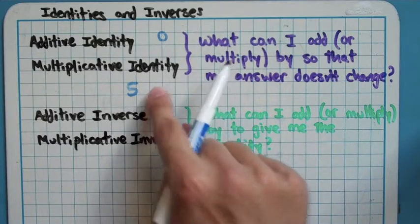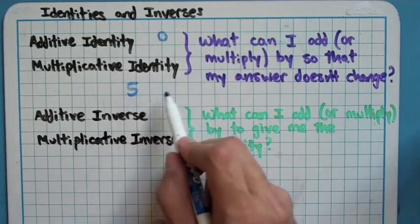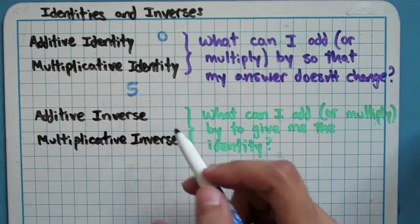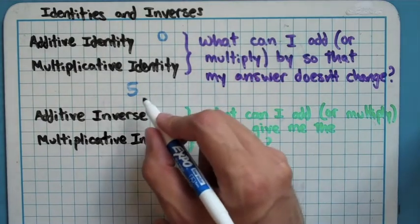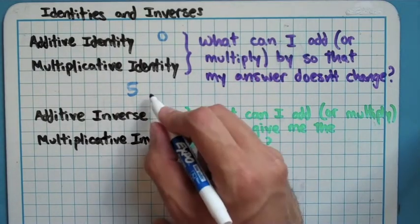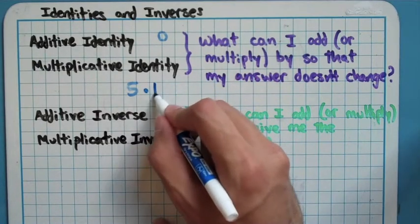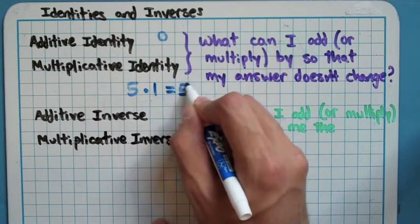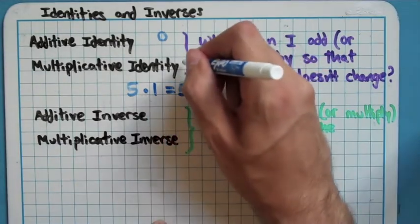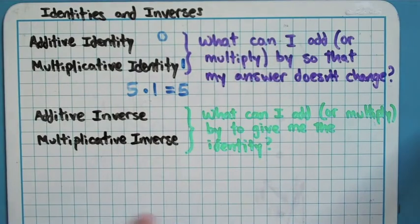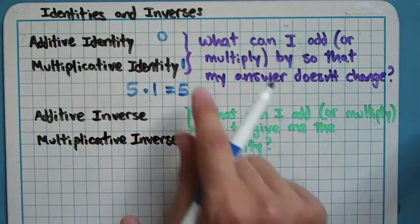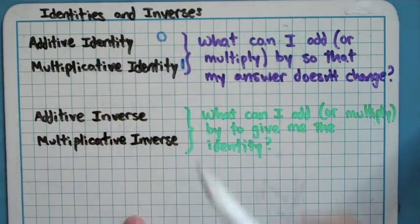Let's say we wanted to multiply right now, instead. Well, what can I multiply by, so my answer doesn't change? Well, 0 doesn't work anymore, because 5 times 0 is going to give me 0. But, 5 times 1 still gets me 5. So, 1 is the multiplicative identity, when you're dealing with just ordinary numbers. If you add 0, nothing changes. If you multiply by 1, nothing will change.